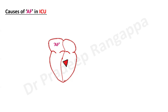Further cardiac causes include previous history of AF, heart failure with low ejection fraction (systolic heart failure), diastolic heart failure or heart failure with preserved ejection fraction - all putting patients at risk of AF. The fourth important cardiac cause is valvular heart disease, such as severe mitral stenosis. So to summarize: heart failure, ACS, valvular heart disease, and previous AF history are the cardiac causes.